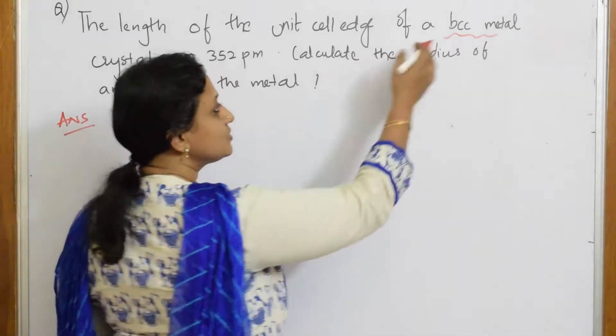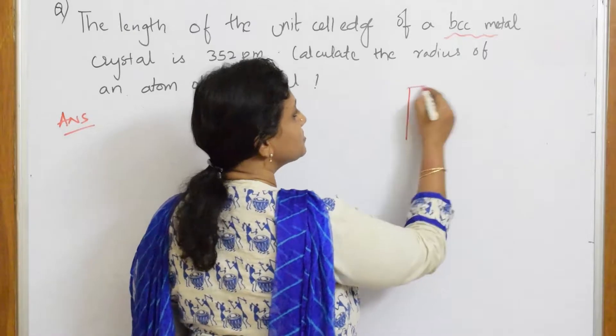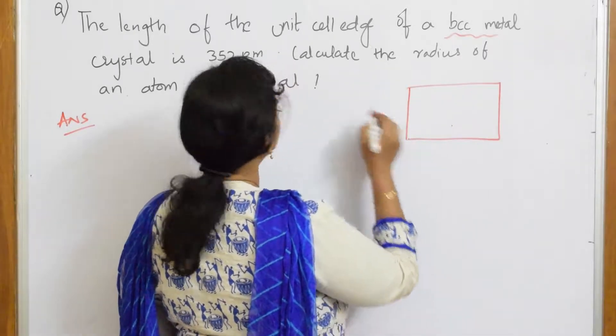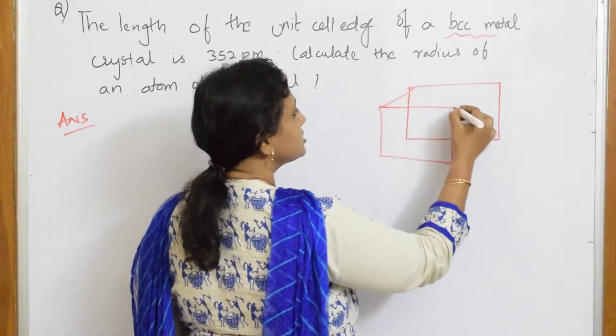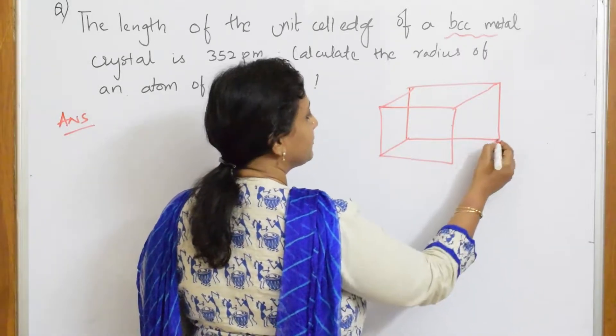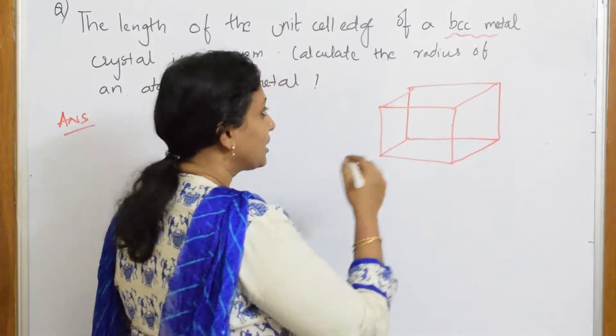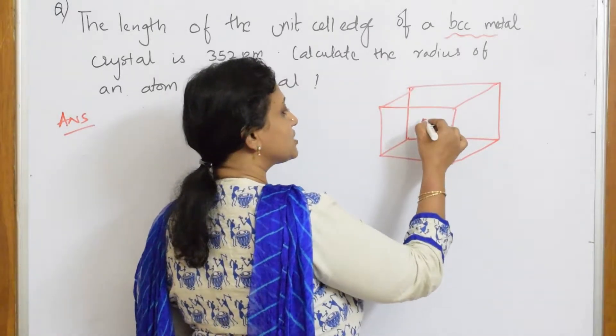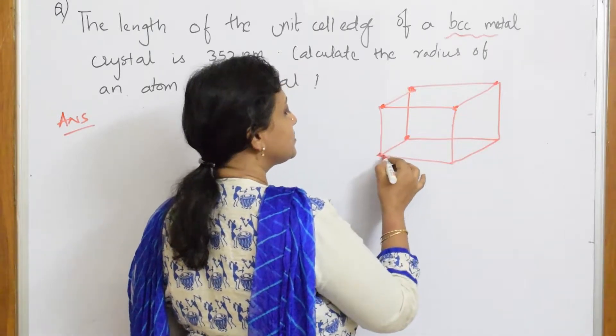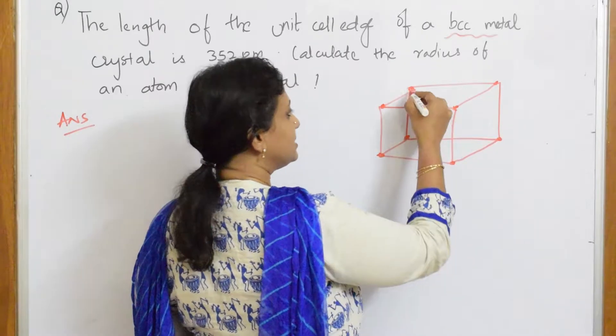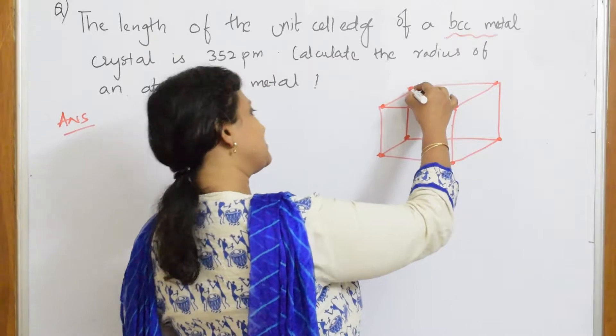Let me draw this BCC structure. In BCC, there is one atom in the corner as well as one atom at the body center. So I'm making a diagonal in the center because there is one atom here at the body center.